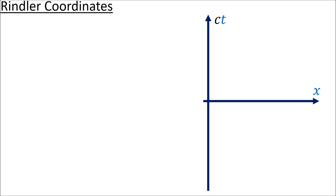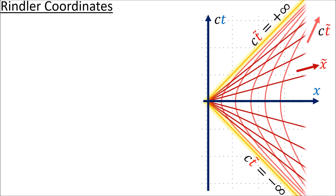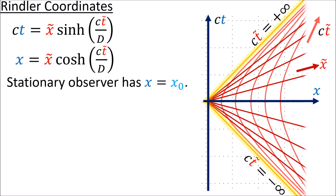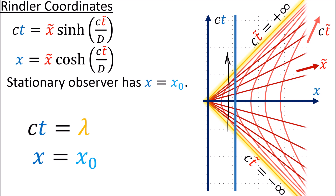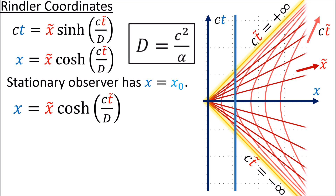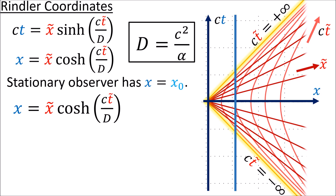Now let's look at spacetime using the Rindler coordinates x-tilde and ct-tilde. The equations that transform between inertial coordinates ct, x and Rindler coordinates ct-tilde, x-tilde are shown here. Let's take a look at our stationary observer with a vertical world line with a constant x value of x0. The equations for this world line are ct equals the path parameter lambda and x equals the constant x0. The inertial x coordinate equals the Rindler x-tilde coordinate times the hyperbolic cosine of ct-tilde over d, where d equals c squared over the constant proper acceleration.